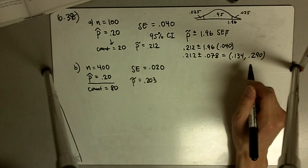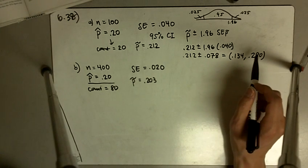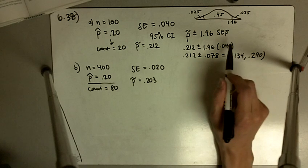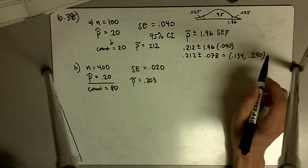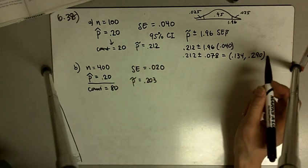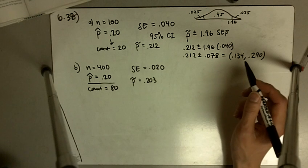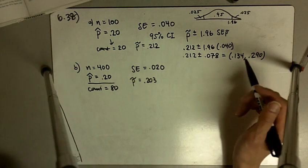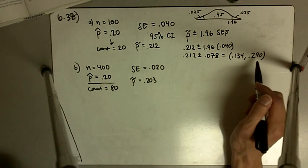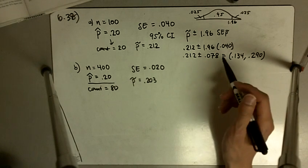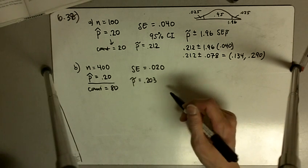So that is the 95% confidence interval for the population proportion. So we're 95% confident that the population proportion of mutants in the population of fruit fly is between 0.134 and 0.290 based on our random sample of size 100.